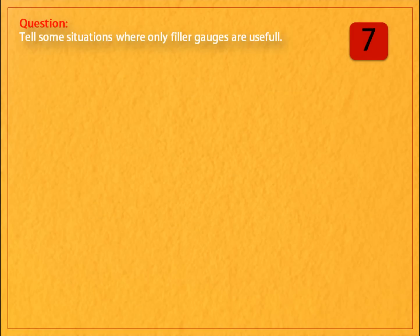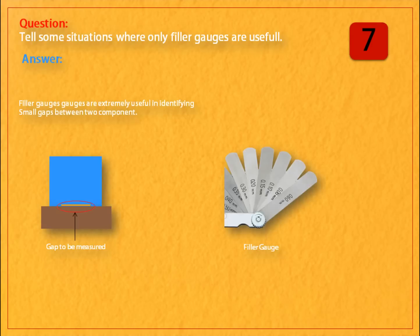Question: tell some situations where only filler gauges are useful. Answer: filler gauges are extremely useful in identifying small gaps between two components.